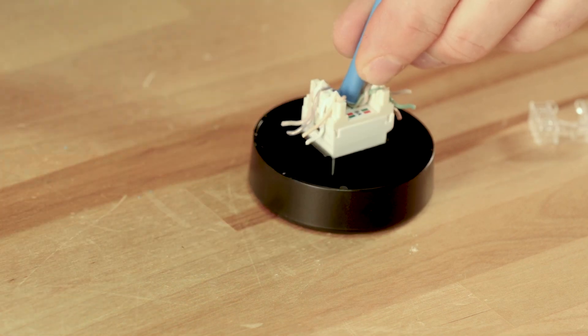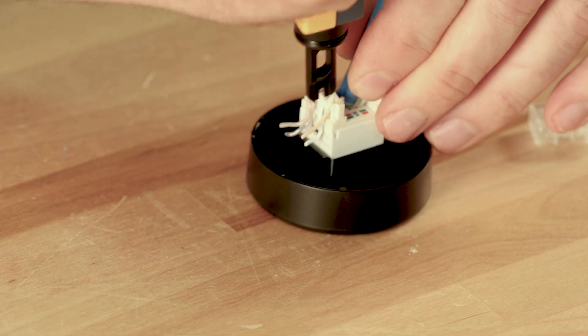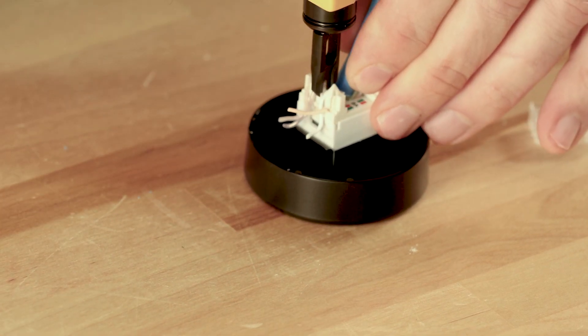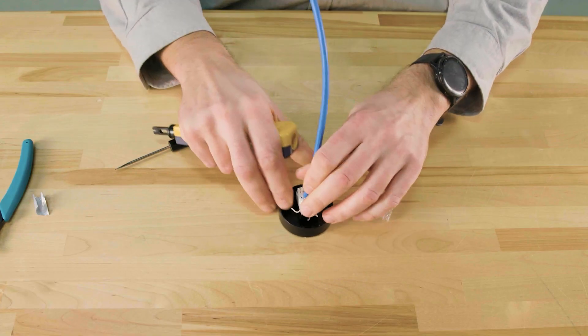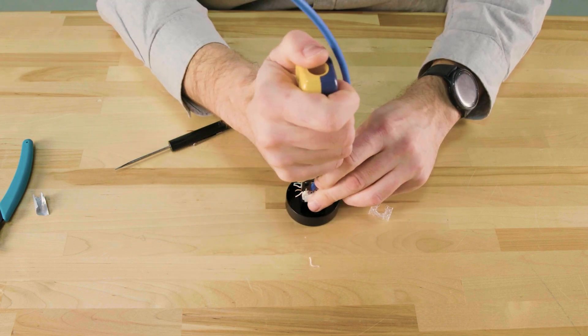Take the termination punch down tool with the blade side outward and lock the cables in place. This tool also cuts the cable as you push them down. Rotate the base to access the other side and repeat the procedure.